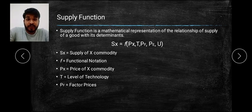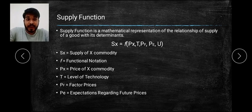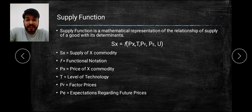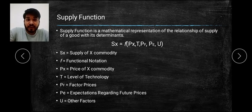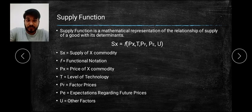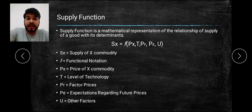All four factors of production are known as factor prices. Then comes Pe, which is expectation regarding future prices — all these determinants we have already studied in our first video. This is being expressed in an equation form. Lastly, U means other factors. This is how all factors affecting supply can be written in a mathematical equation form.